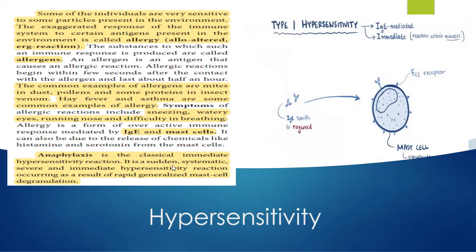Next, let us see what hypersensitivity is. Sometimes certain substances, nutrients, or foods inside the body can create an allergic reaction — this is called hypersensitivity. Some persons have an exaggerated response from the immune system to certain antigens. For example, pollen grains or dust particles can immediately cause symptoms like sneezing, running nose, or hay fever. These are called allergic reactions or hypersensitivity.